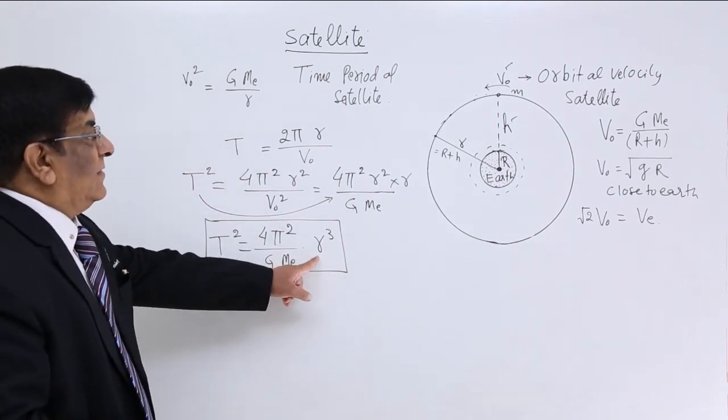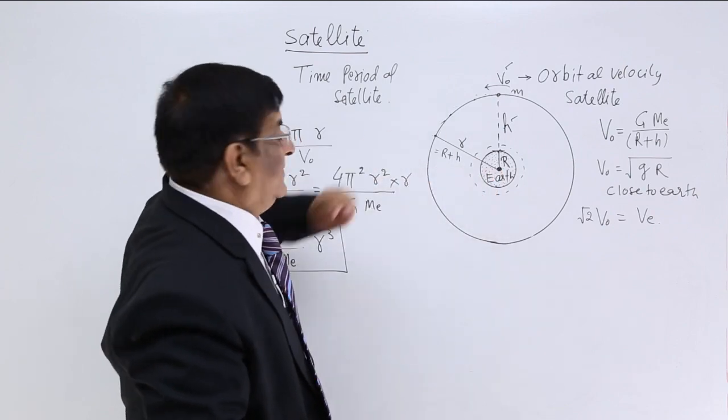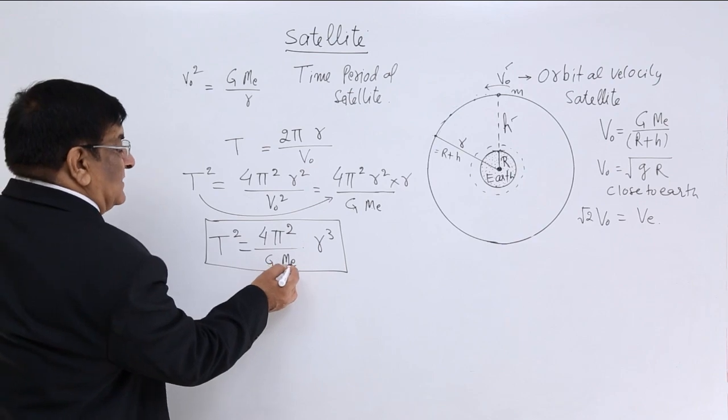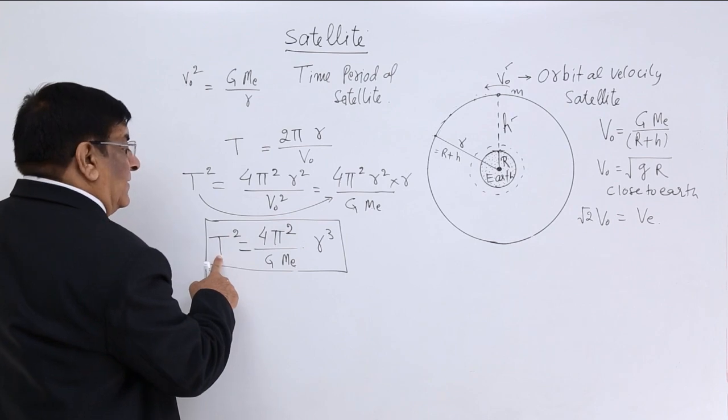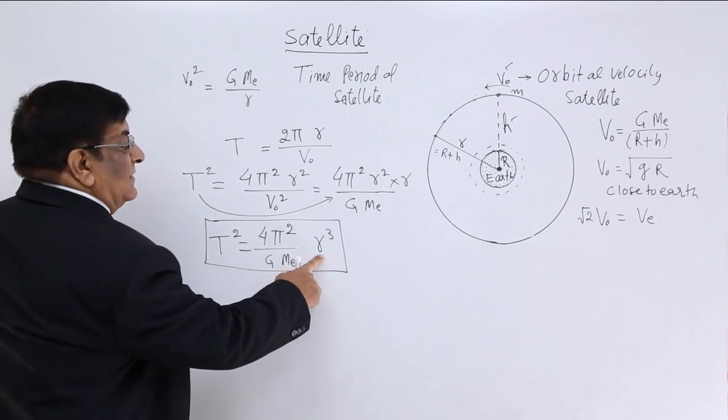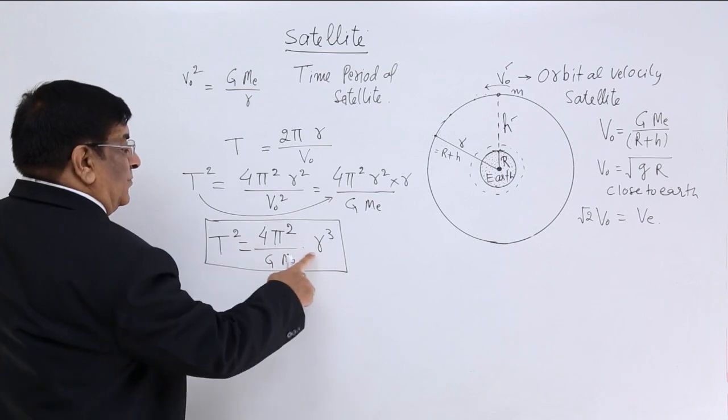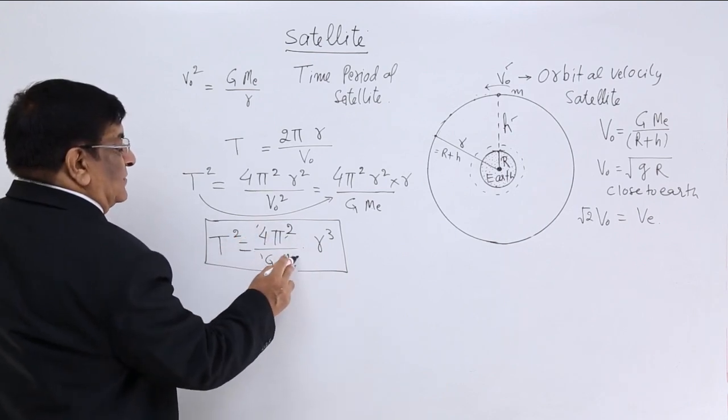4 pi square upon g m e multiplied by r cube. What is this r, distance of the satellite from center of the earth. Now here this is mass of earth. So for earth the time period and this radius of rotation, they are proportionate to each other. Constant for earth.